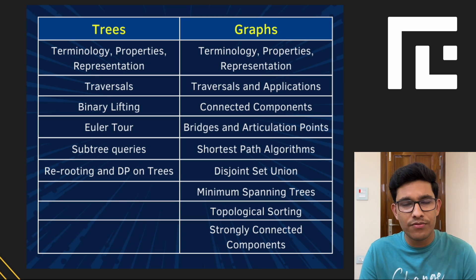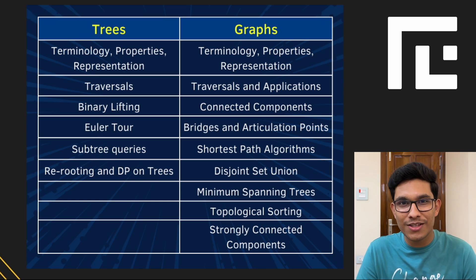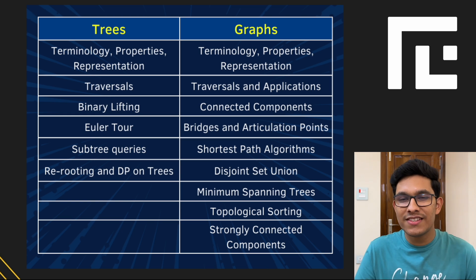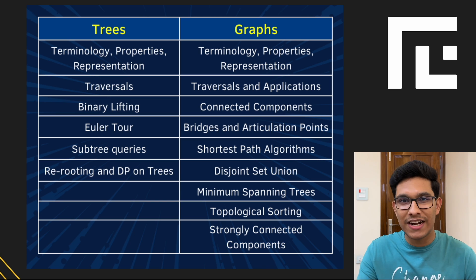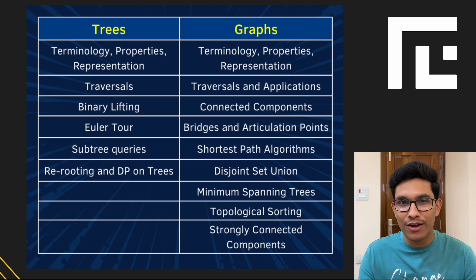As far as graphs are concerned, we'll again be starting from the very scratch — basic terminology and representation. Then we'll move on to DFS, BFS, and their basic applications like bridges and articulation points. We'll also move to shortest path algorithms: Dijkstra, Bellman-Ford, and Floyd-Warshall. We'll teach you how these algorithms work and then primarily focus on application. For example, when we teach Dijkstra, we won't just cover how the algorithm works with standard problems — we'll also look at very advanced Codeforces problems to teach you how to apply these concepts, because the real game is applying them.